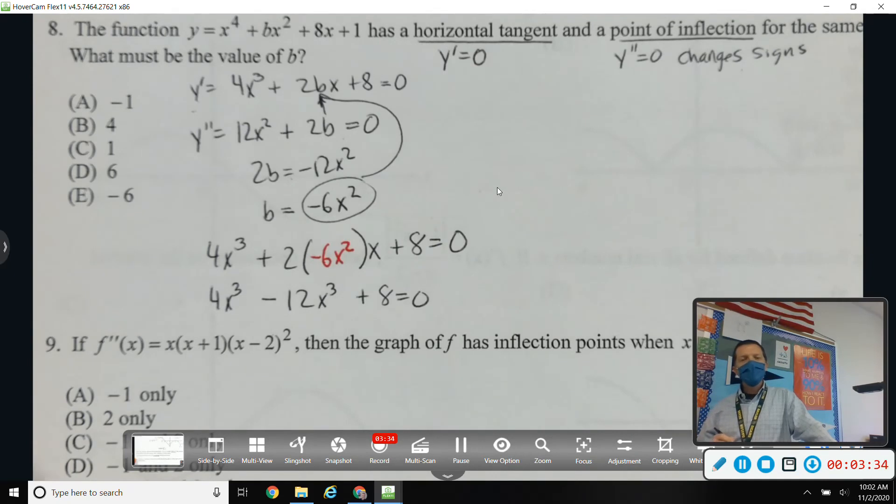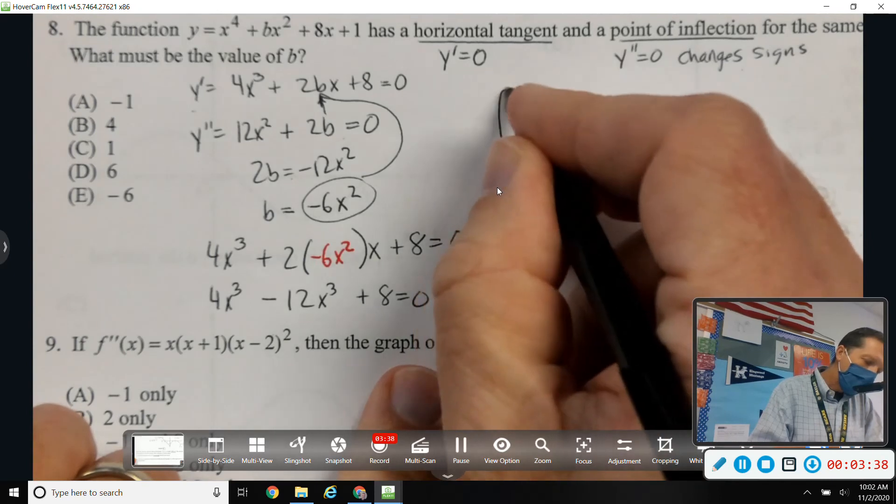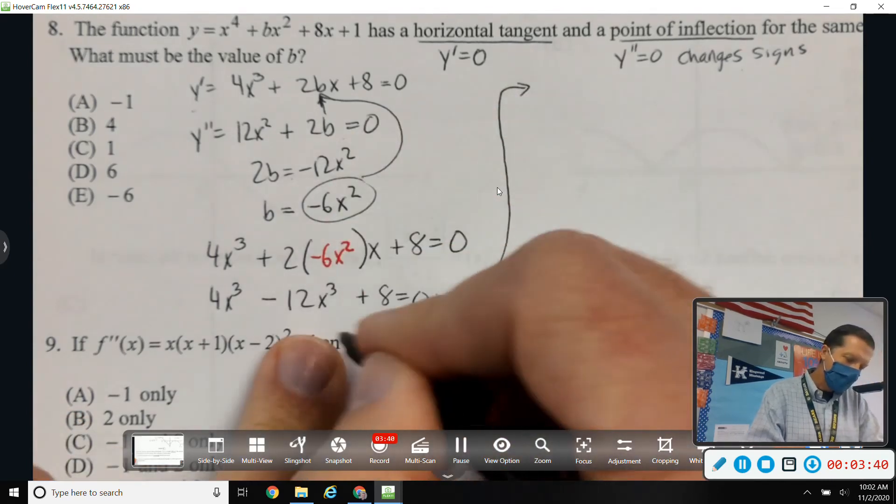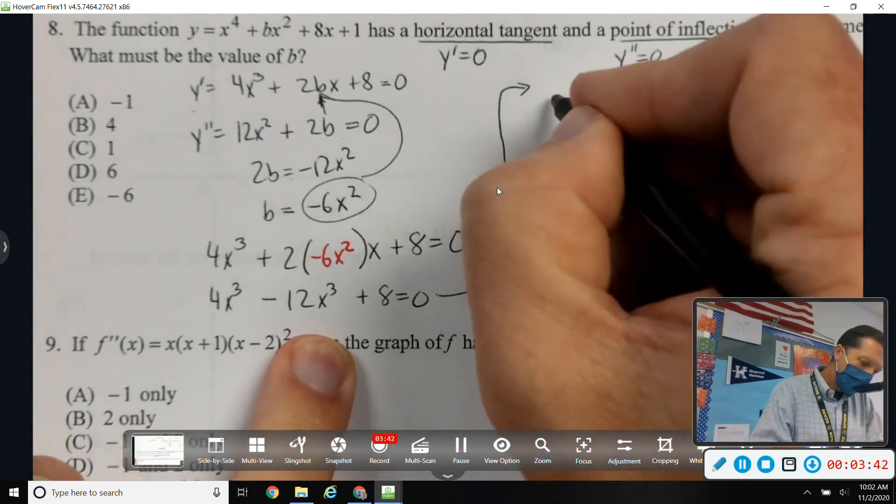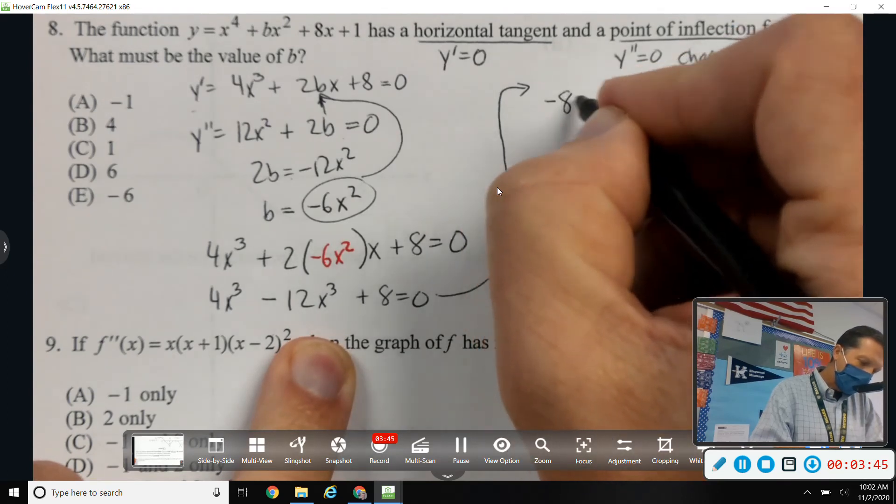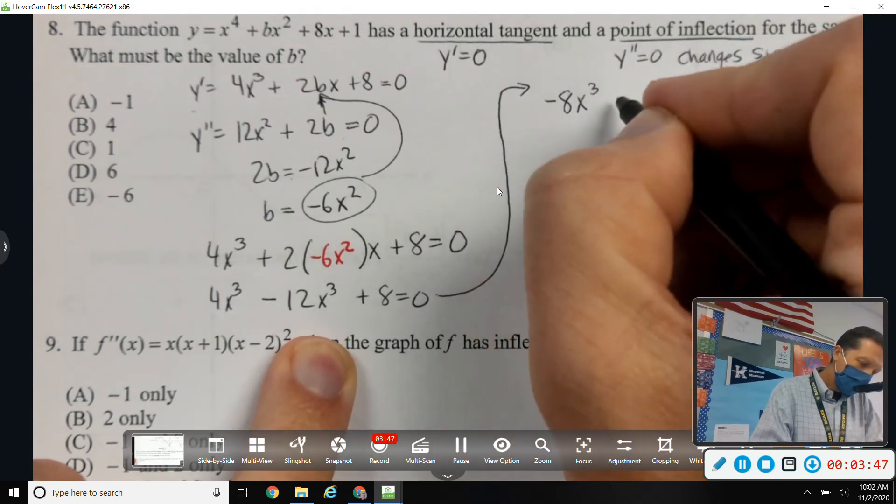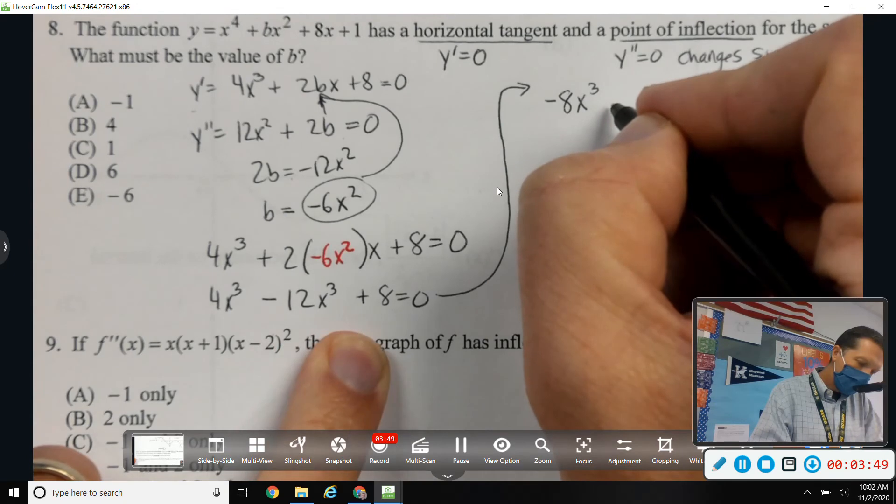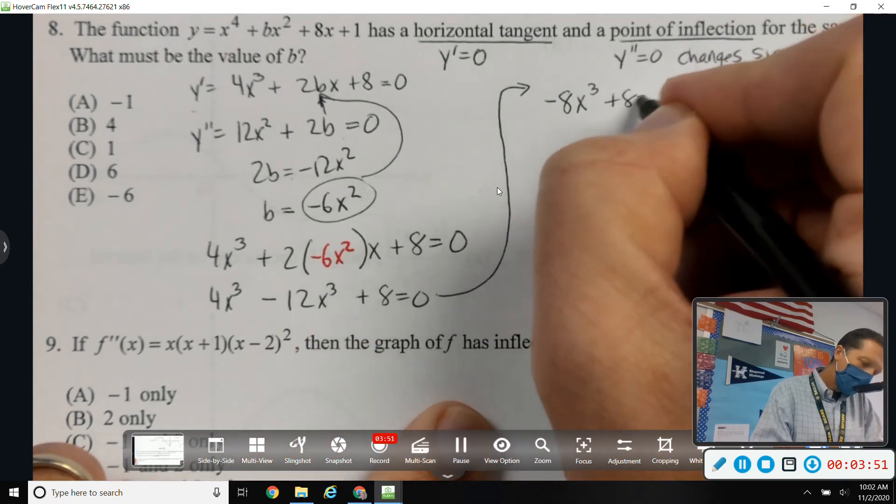4x cubed minus 12x cubed plus 8 equals 0. Oh, I'm peeking ahead. I'm seeing a... This is typical of AP type questions. They look hard, and then stuff starts happening, and things kind of work out in your favor here.